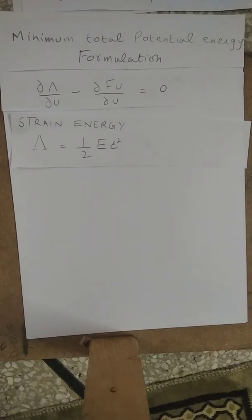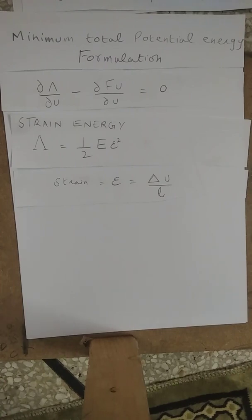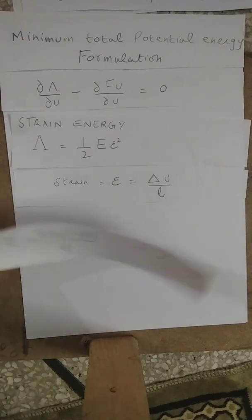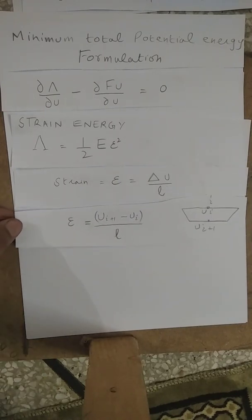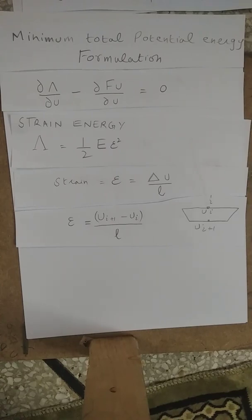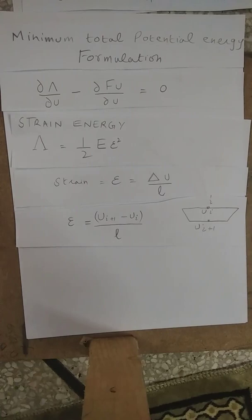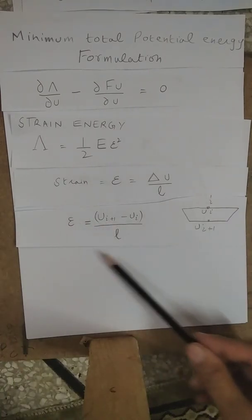Here we have the strain energy. The formula for strain energy is equal to 1/2 · E · ε², where E is the modulus of elasticity and ε is the strain. We know that strain is equal to change in deformation over original length. For an element with two nodes I and I+1, the strain equals (U_{I+1} − U_I) / L.